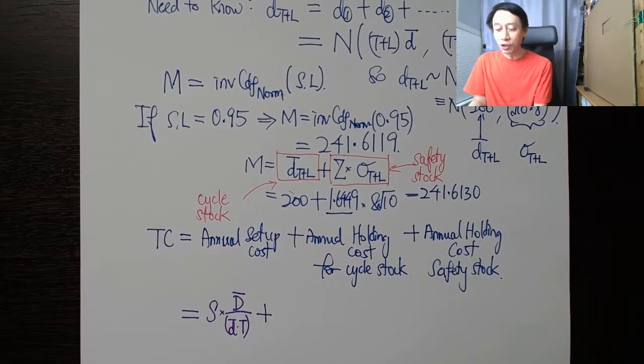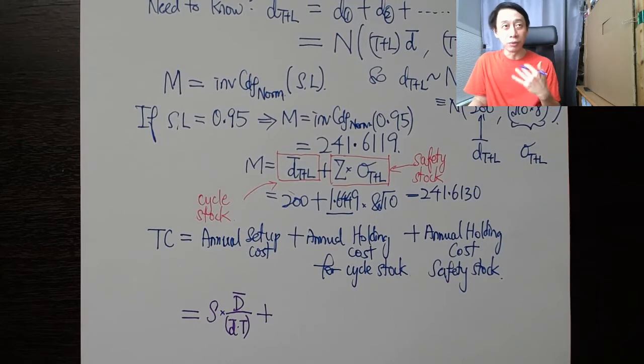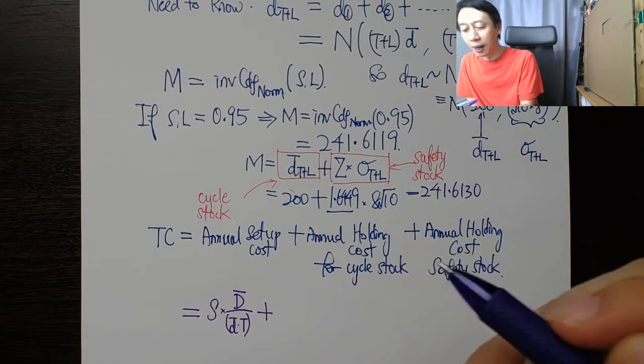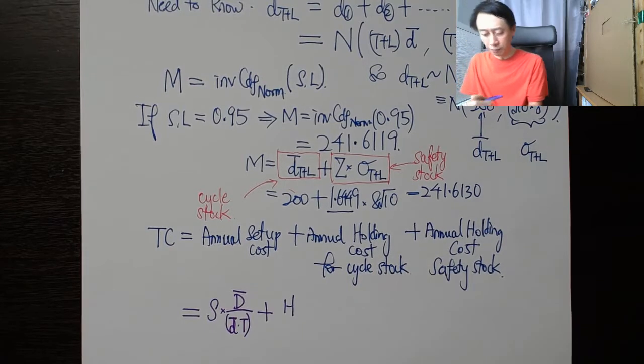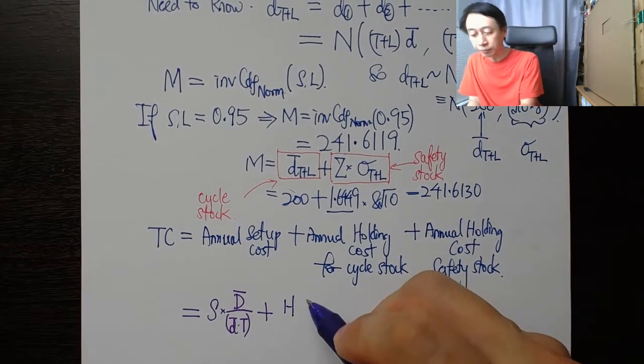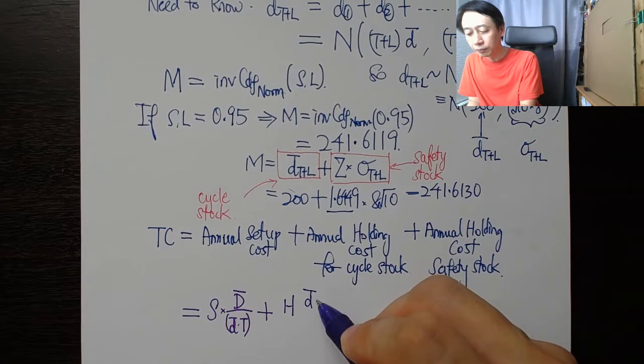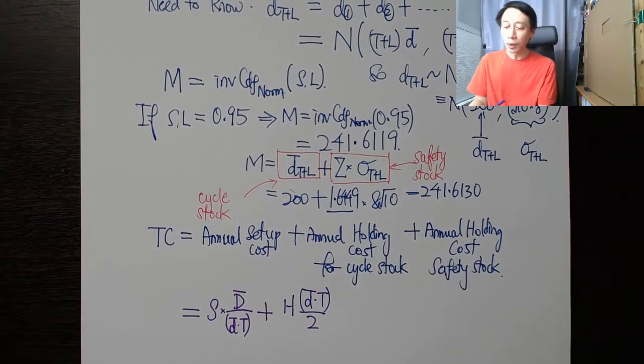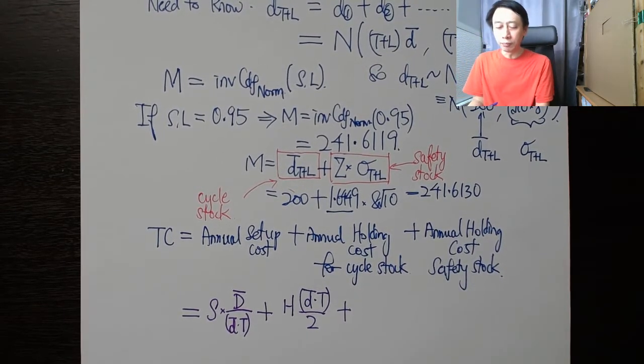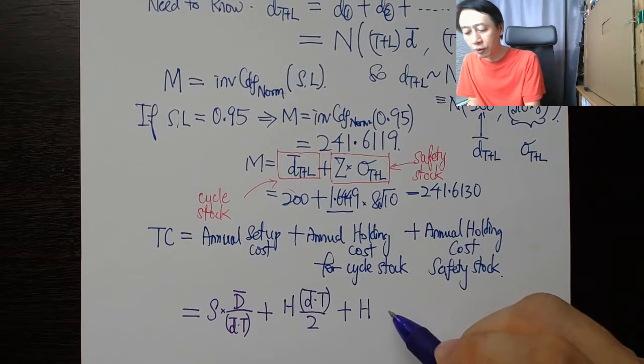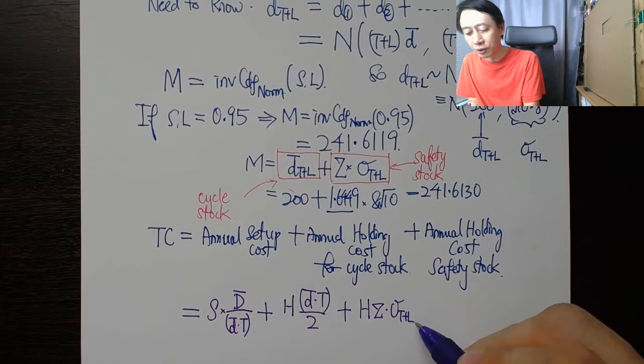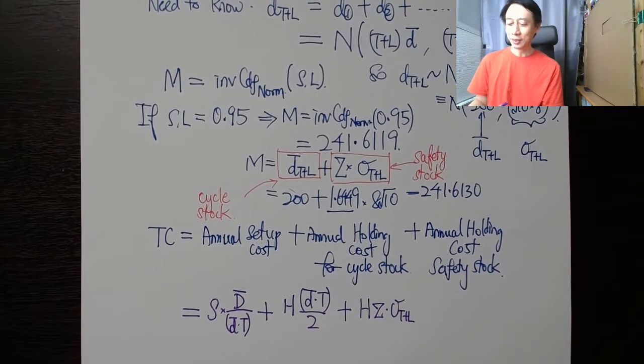We might expect that whenever Q appears in the continuous review dynamic demand case, we'll change it to d̄ times capital T. We have H times half of Q, so we're going to replace that. And finally for holding the safety stock, we have H times Z times σ of T plus L.